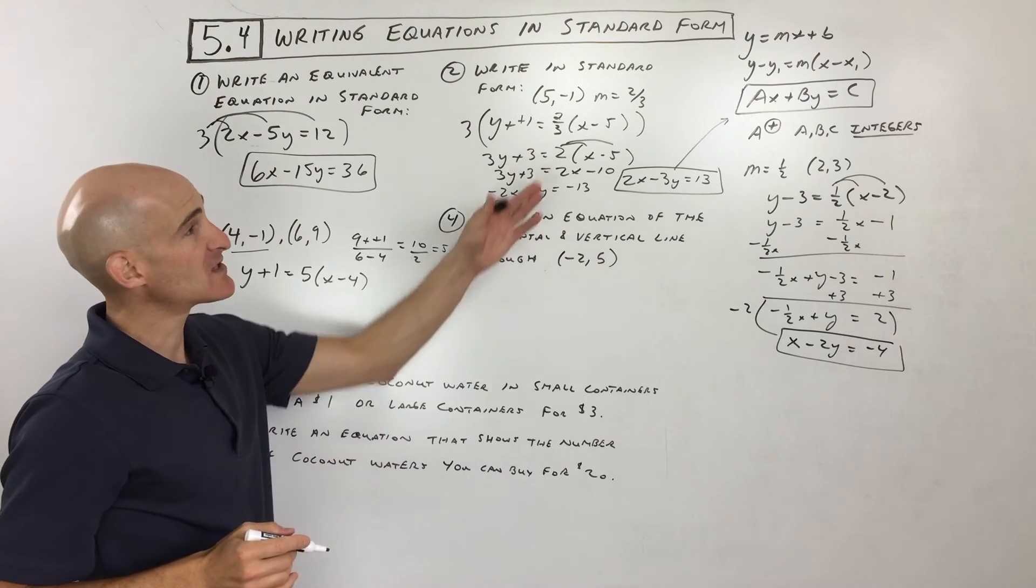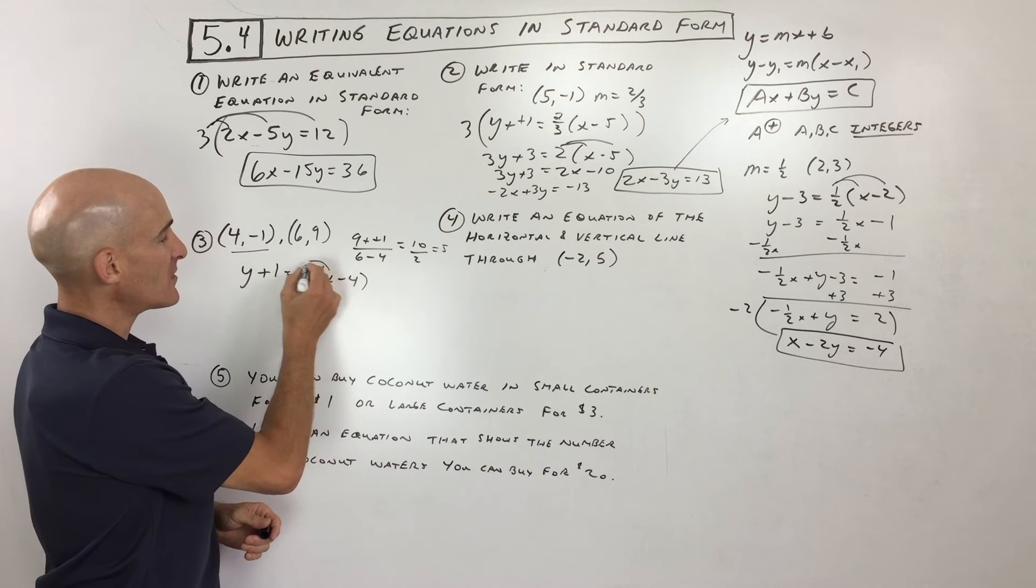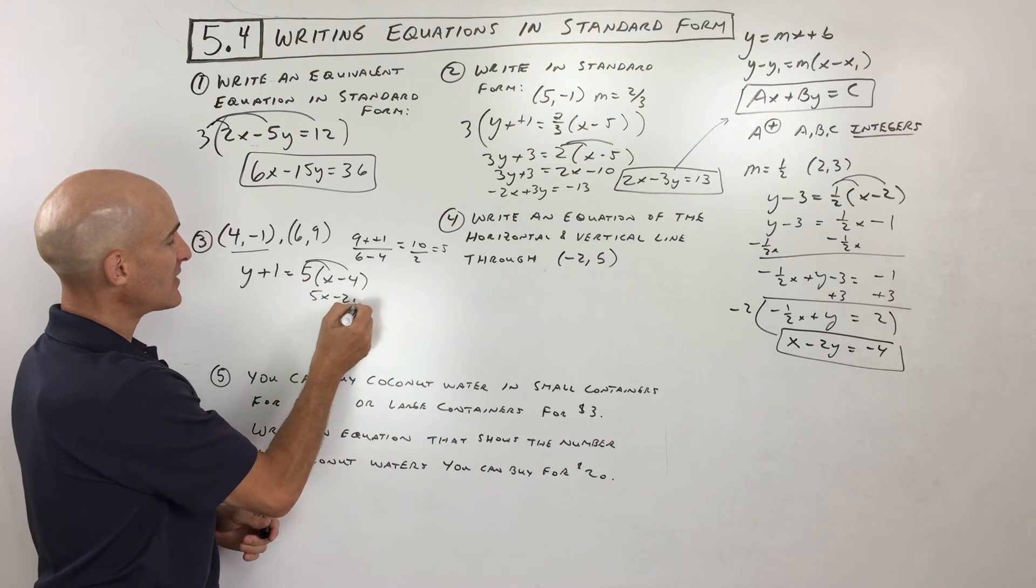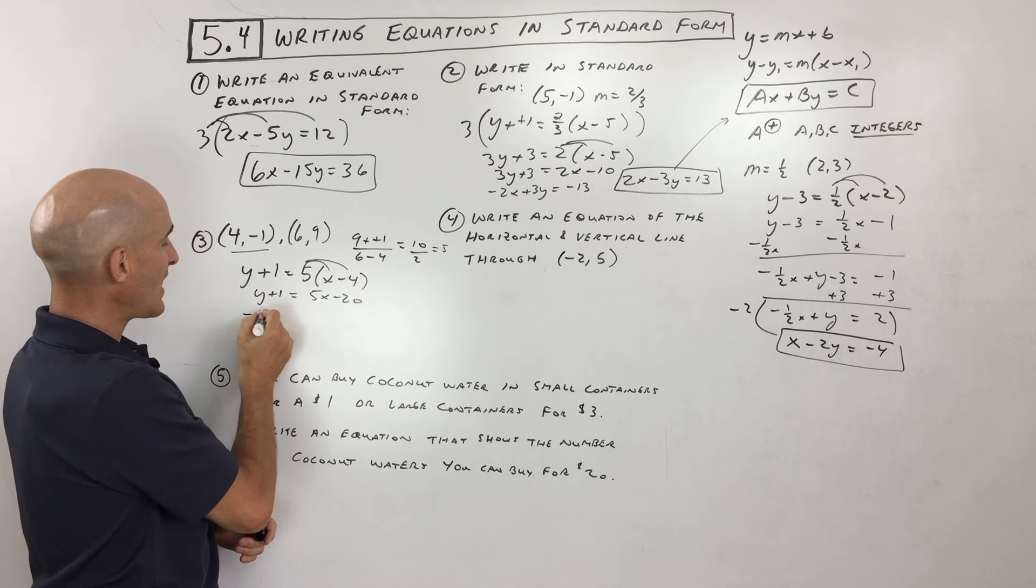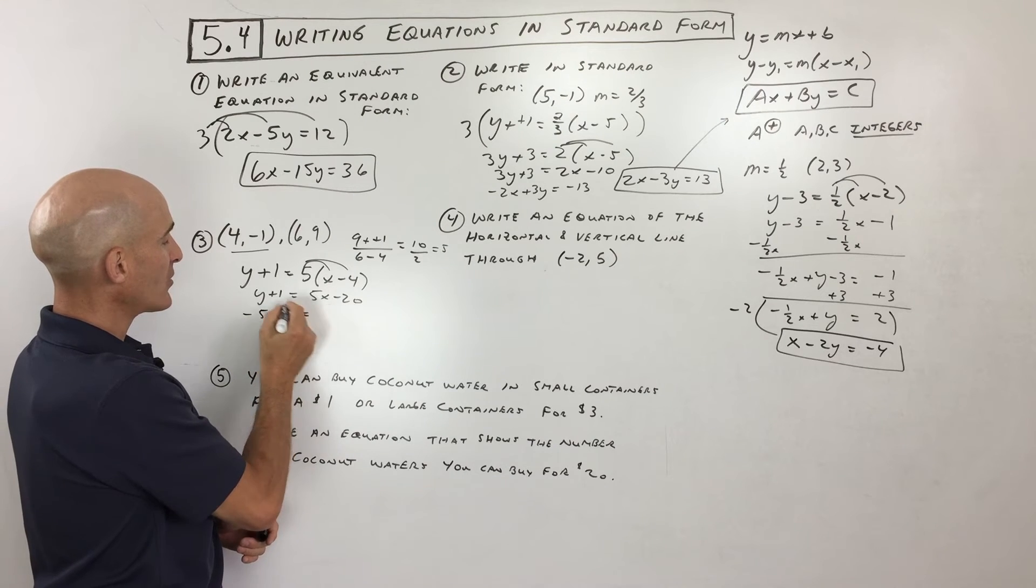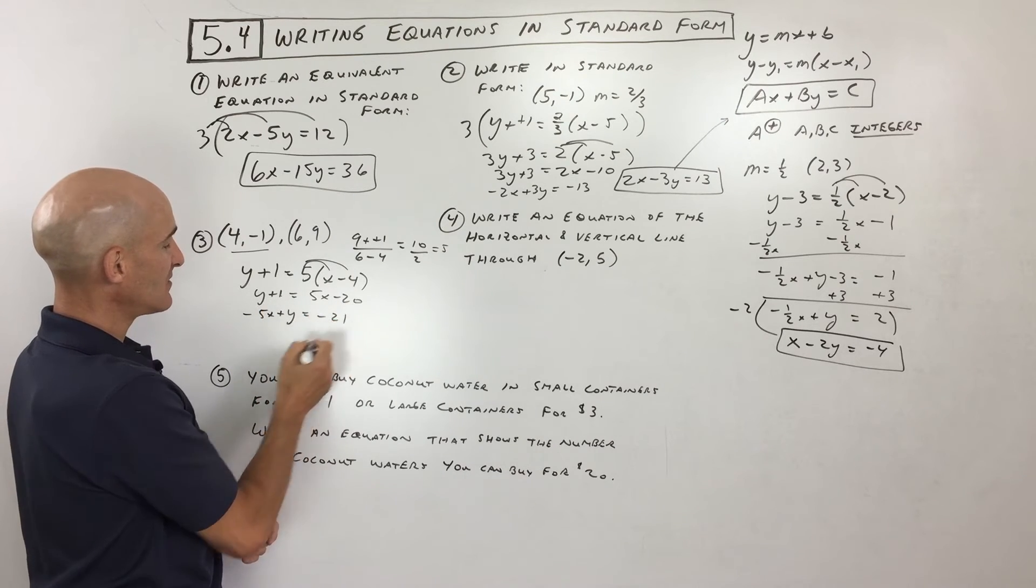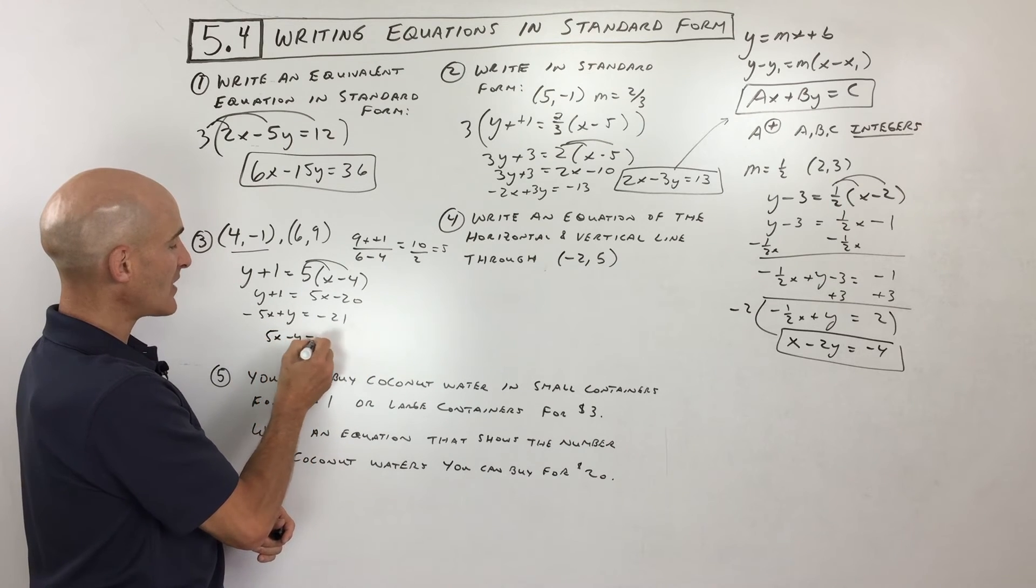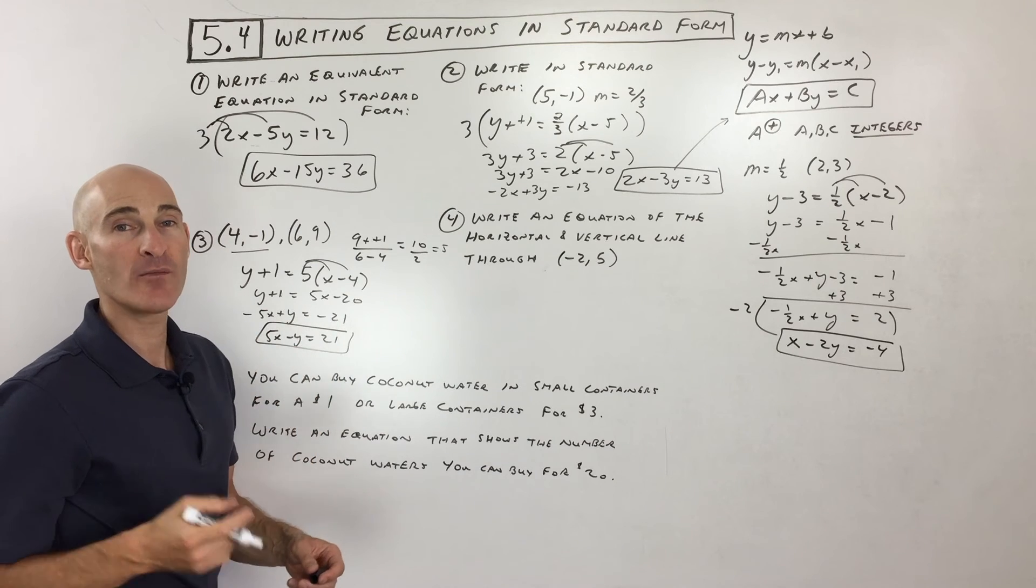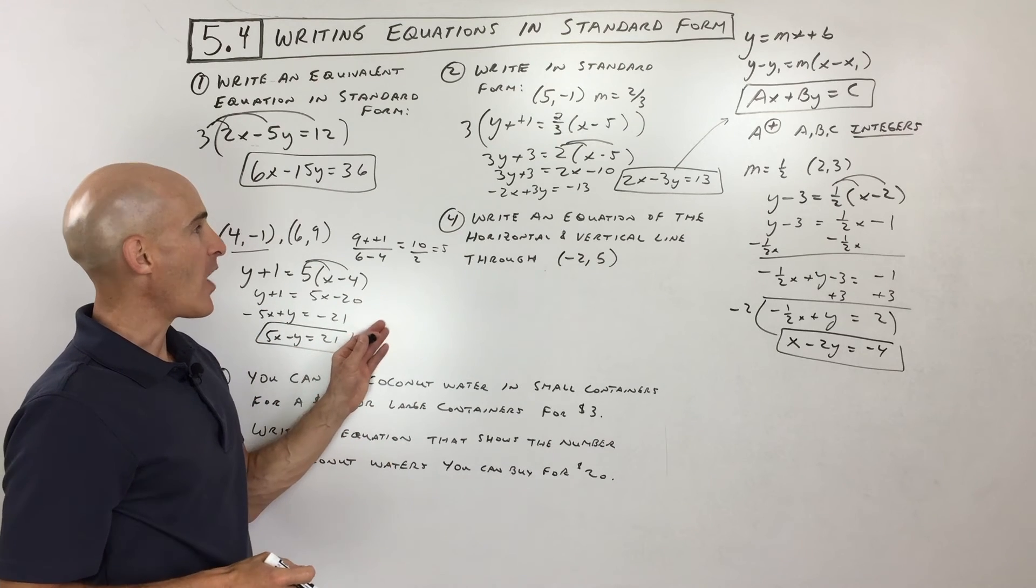We've got it in point slope form. We just have to rearrange it into the standard form. So I'm going to distribute. That's 5x minus 20. I'm going to subtract 5x from both sides. I'm going to subtract 1 from both sides. Okay, I'm going to multiply through everything by negative 1. So that's 5x minus y equals 21. Now we've got it in the standard form, and that's what they wanted.